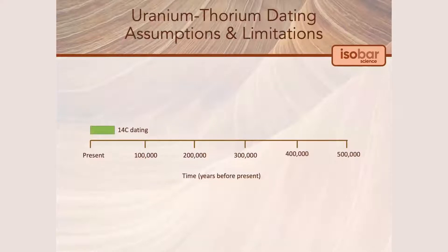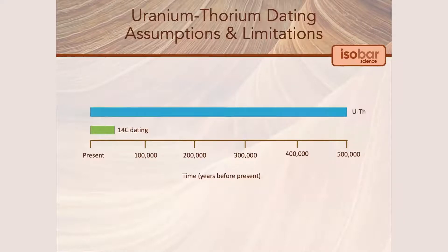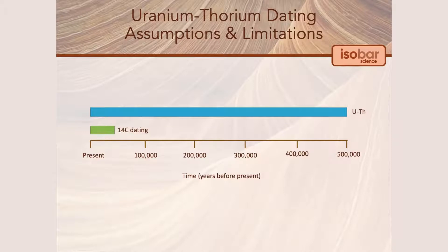While radiocarbon dating is generally limited to less than 40,000 calendar years before present, uranium-thorium dating can be used between present and 500,000 calendar years before present. While uranium-thorium dating does have a much larger window of time for analysis, the dating error does increase as the sample gets older, as well as for very modern samples.